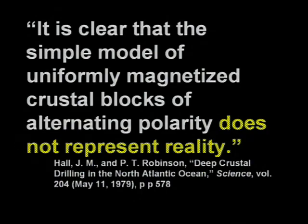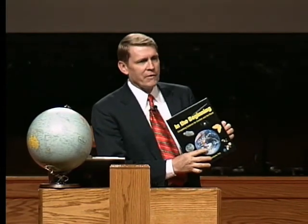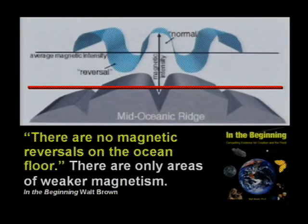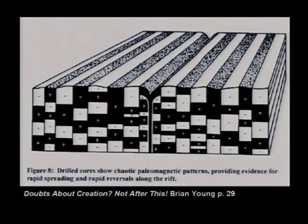Even one author wrote in Science Magazine, Volume 204, in the article 'Deep Crustal Drilling in the North Atlantic Ocean,' that 'it's clear the simple model of uniformly magnetized crustal blocks of alternating polarity does not represent reality.' What they show you in your textbooks is not reality. Walt Brown has a great book called 'In the Beginning' — he's a friend of mine, a brilliant man with a PhD in physics who taught at the Air Force Academy. He's got great material on magnetic reversals. The earth has actually lost 10% of its magnetic strength in the last 150 years and 40% in the last 1,000 years.